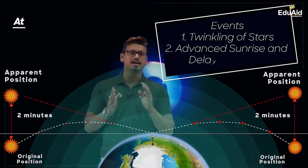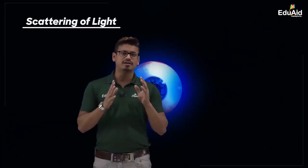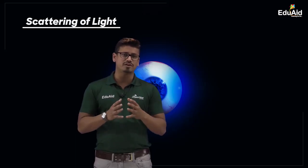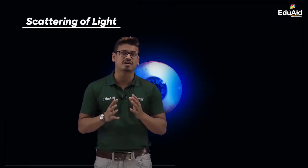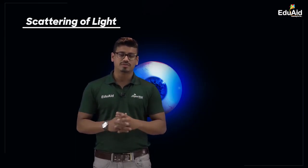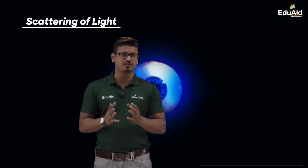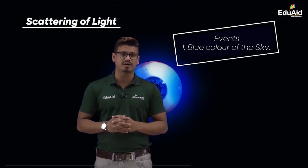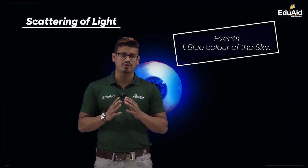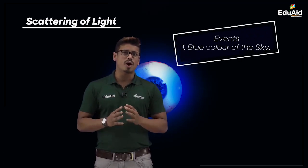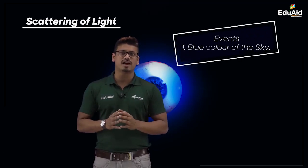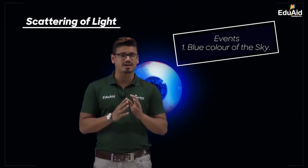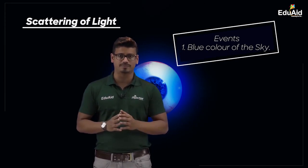Our last topic was scattering of light. Under scattering of light we studied the events caused by it. The first event is the blue color of the sky — why the sky appears blue during daytime is because of scattering of white light.